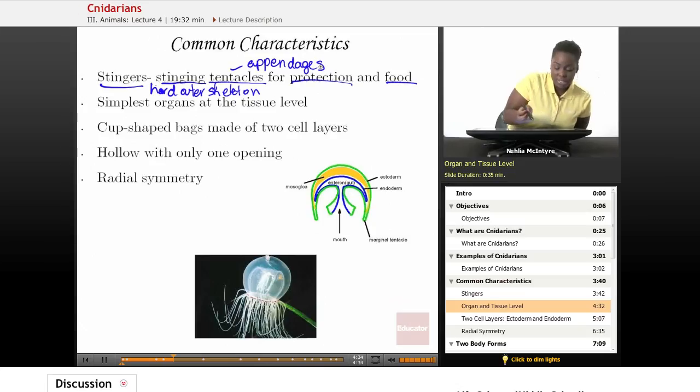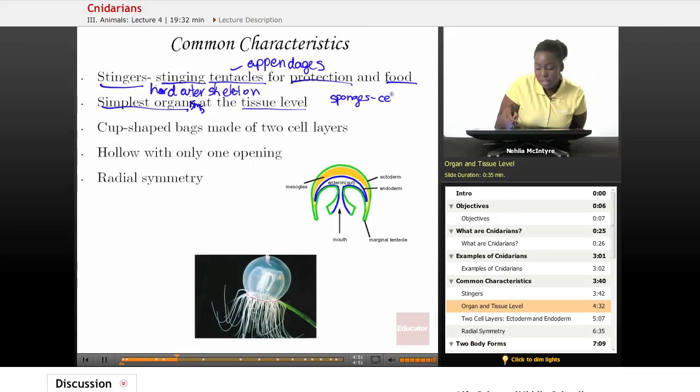Also, another characteristic is that all Cnidarians are actually the simplest organisms at the tissue level. Again, sponges are the simplest animals at the cellular level, but sponges don't have organized cells that make up a tissue that can help it to do a specific function. So Cnidarians actually are the simplest organisms at that level.